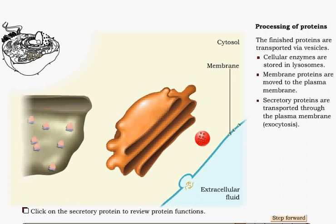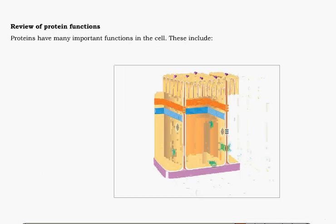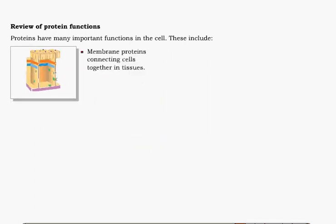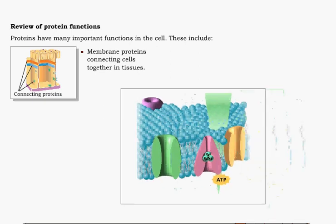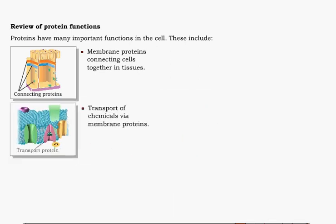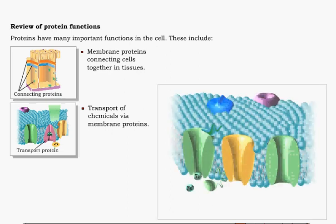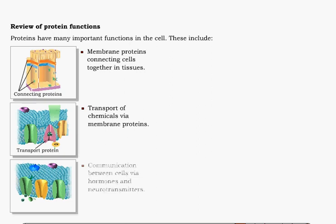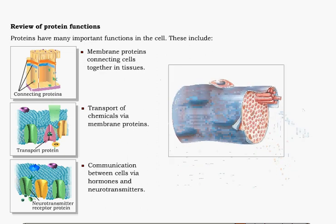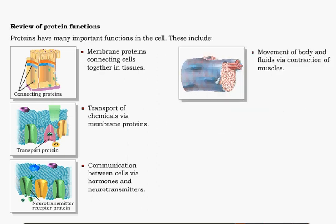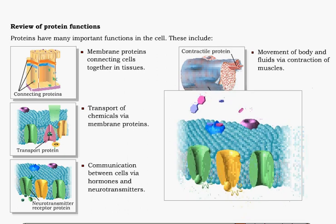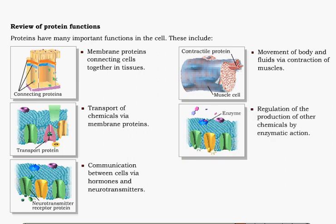Proteins are fundamentally important in providing many cell functions. Intercellular connections are the result of proteins. Important functions include the movement of nutrients, fluids, and information. Proteins are involved in cell responses to changes in internal and external environments, or homeostasis. Contractile proteins found in muscles are very important in moving fluids and the body in general. The most important of the proteins are enzymes, which regulate the appearance and activity of each cell by regulating cellular production of chemicals.